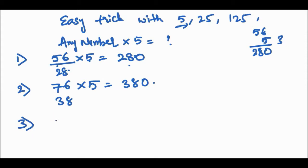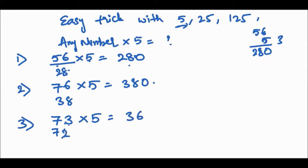Now let's take an odd number. Those were even numbers — now take 73 into 5. Take the nearest smaller even number, 72. Half of 72 is 36. Then since 73 = 72 + 1, the answer is 365.